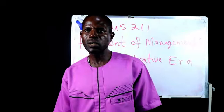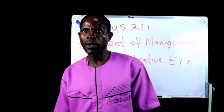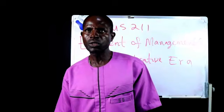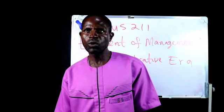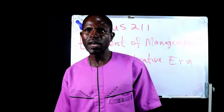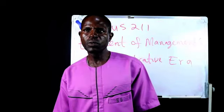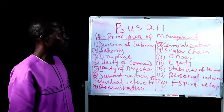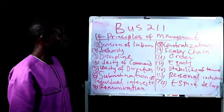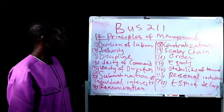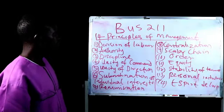Those are the six qualities and abilities of the chief executive that Henry Fayol mentioned. He then went further to develop the 14 principles of management. He believed that there is no organization that does not adopt all these 14 principles, which he developed in order to ensure efficiency and high productivity in organizations.